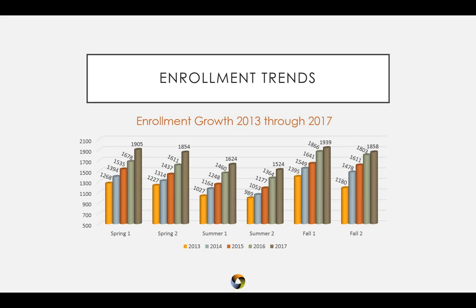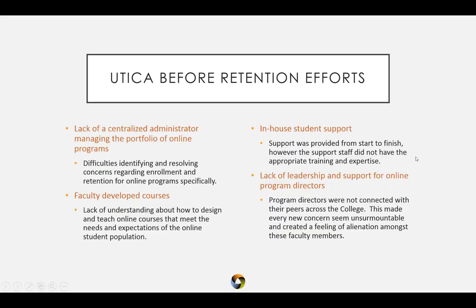Have we been successful? I think the fact that I'm talking to you today shows that we have been. I can also talk about how we got from where we started in 2013 to where we are today. Data for 2018 is about on par — we're seeing increasing enrollments, but retention rates are holding around 92 to 94 percent. I want to talk not only about how we got there, but what it looked like in 2013.